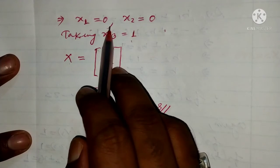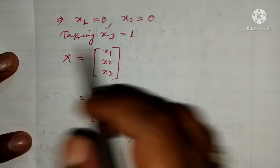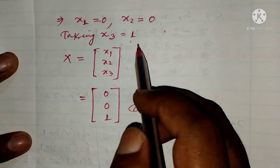From this we find that x1 equals zero and x2 equals zero. Since we don't have information about x3, we can assume, let's take x3 equals 1.